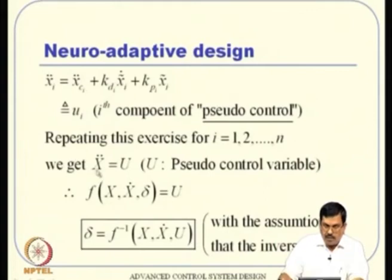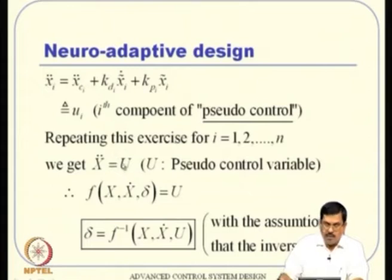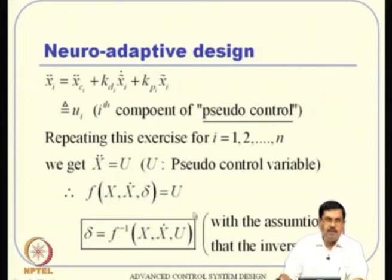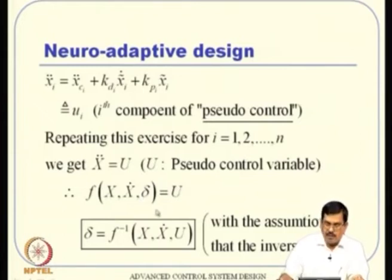Writing in vector form: X_double_dot = U (pseudo control vector). Since the system dynamics also gives X_double_dot = F(X, X_dot, delta), we equate the two. With M = N and F invertible, we can solve for delta = F_inverse(U), where U contains the commanded variables and gains. This is regular dynamic inversion — as long as we know X, X_dot, and the commanded signal with its derivatives, we can compute delta.